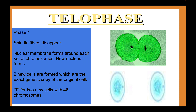During telophase, the spindle fibers disappear, and the nuclear membrane reforms around the new set of chromosomes for each new cell. A cell nucleus forms, and the two cells produced are exact copies of the original cell. Cytokinesis also occurs during this stage, meaning the two cells split and become completely separate. For human beings, these new cells will each have 46 chromosomes — a full complement for mitosis.